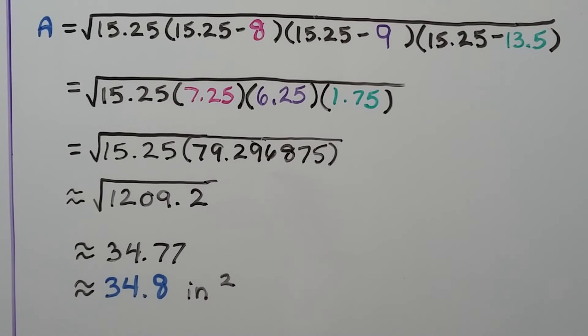And the decimal went on, so I rounded it to .2 at the tenths place. I need to find the square root of this. Using my trusty calculator, I find out it's 34.77 and then it went on longer. We want to round it to the nearest tenth, so I only needed that 7. And we've got approximately 34.8 inches squared. So we found the area of the triangle using Heron's formula, just knowing the side lengths.